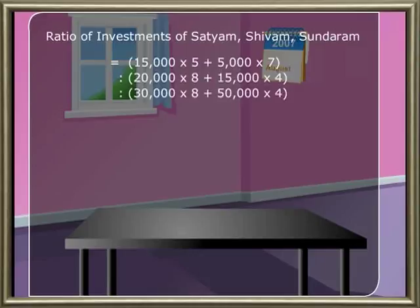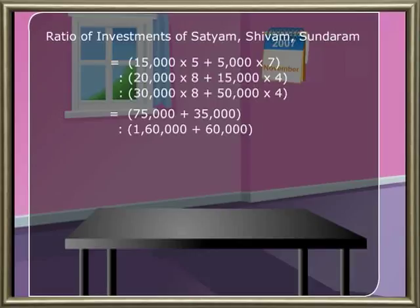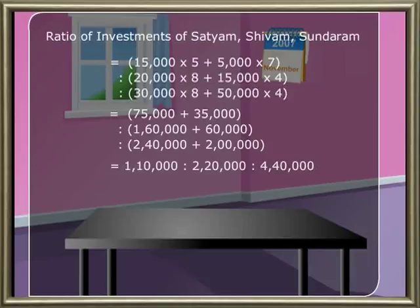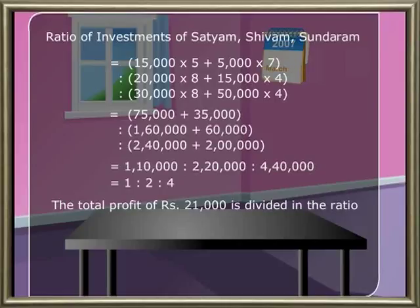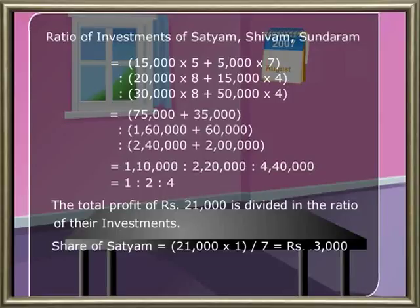This works out to: 75,000 plus 35,000 is to 1,60,000 plus 60,000 is to 2,40,000 plus 2,00,000, which equals 1,10,000 is to 2,20,000 is to 4,40,000. Simplifying, the ratio is 1 is to 2 is to 4. The total profit is rupees 21,000, divided in the ratio of their investments.